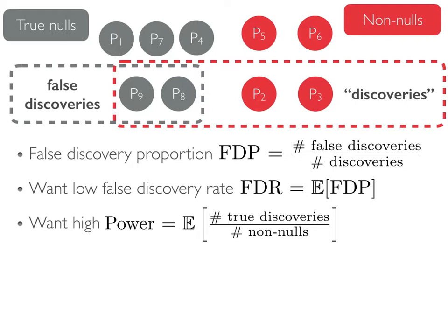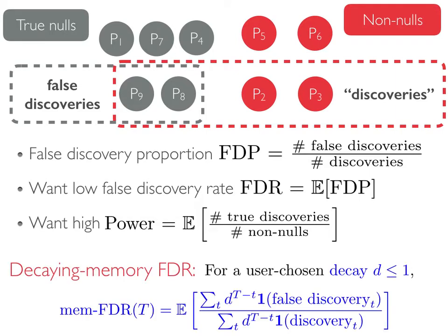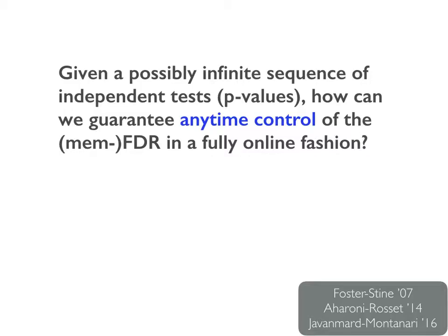In truly online applications, recent discoveries are likely more relevant than older ones, and we would like a way to smoothly forget the past. With this motivation in mind, we allow the user to choose a decay parameter D, and we define the decaying memory FDR, or MEMFDR, as an exponentially weighted average of past discoveries. The central question of this paper is: given a possibly infinite sequence of independent tests and p-values, how can we guarantee any-time control of the FDR or MEMFDR in a fully online fashion?